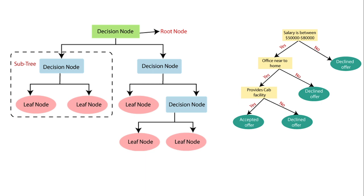These types of decisions: again suppose he is getting an offer of $50,000 to $80,000 per annum. Then there is another option — whether the company is nearer to his hometown or it is away. Suppose the company is away from the hometown, he declines the offer. If it is nearer, there is a chance he selects it. Similarly, if the company is nearer, then he checks whether they are providing any transportation, like a cab facility. If yes, he accepts; otherwise he declines. So we use this decision tree for this type of decision.